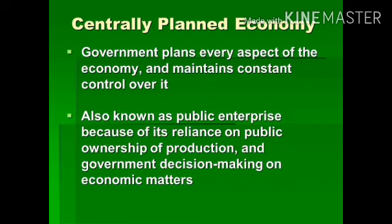In a centrally planned economy, the central authority decides what to produce, how to produce, and for whom to produce. Resources are controlled by the government; the public sector dominates economic activity. It is also known as a public enterprise because of its reliance on public ownership of production and government decision-making on economic matters. The center decides every aspect of the economy — price, expenditure, distribution of resources — everything is controlled by the government, with the aim of social welfare. A classic example is Indian Railways, which is a complete government monopoly with no competition, providing cheap tickets for social welfare.